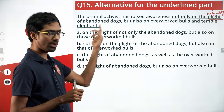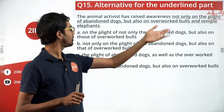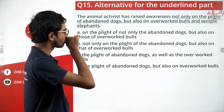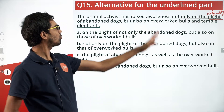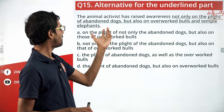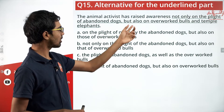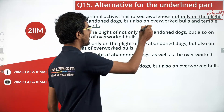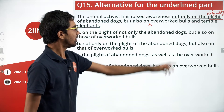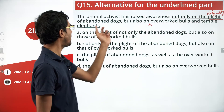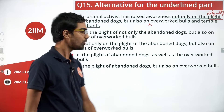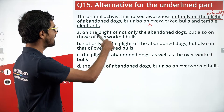One is the abandoned dogs, the second is the overworked bulls and temple elephants. Let's see why one option is wrong. 'Not only on the plight of abandoned dogs but also on overworked bulls and temple elephants' — this misses the word 'plight.' It should have been 'the plight of overworked bulls.'